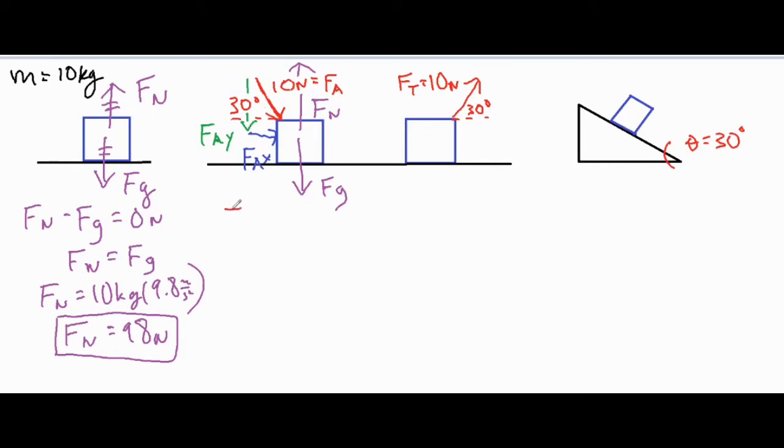So we have the normal force going upwards, and then in the downward direction we have that Fa y and we have that Fg going down to cancel it out and make it zero newtons in the vertical direction. Now one of the values that we're going to have to solve for first before we go any farther is the Fa y, so we're going to do a little bit of trig.